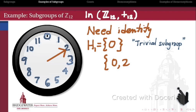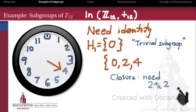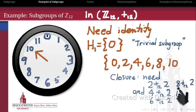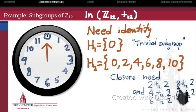Suppose we also want 2 to be part of a subgroup. Because of closure, we need 2 added to itself, which is 4. Then 4 + 2 = 6, then 6 + 2 = 8, then 8 + 2 = 10, and 10 + 2 mod 12 = 0. So {0, 2, 4, 6, 8, 10} satisfies closure.